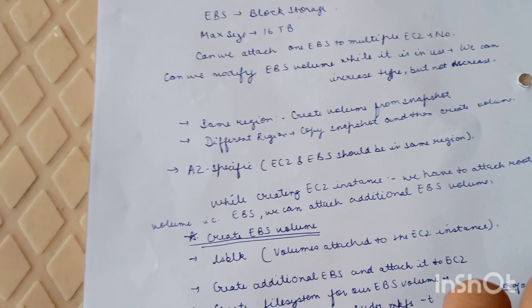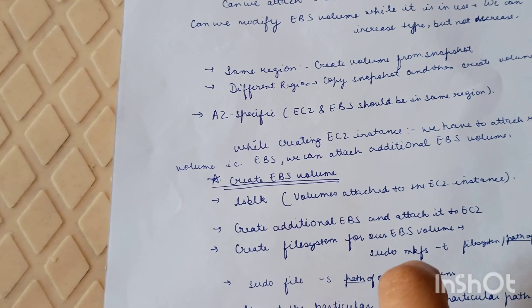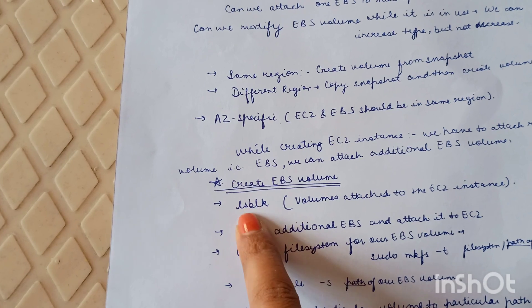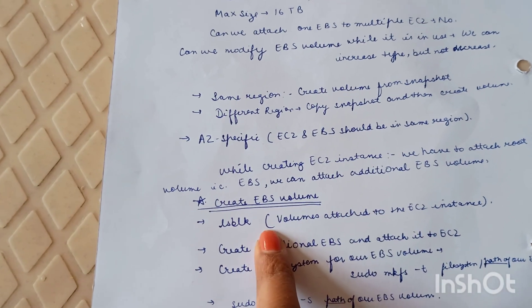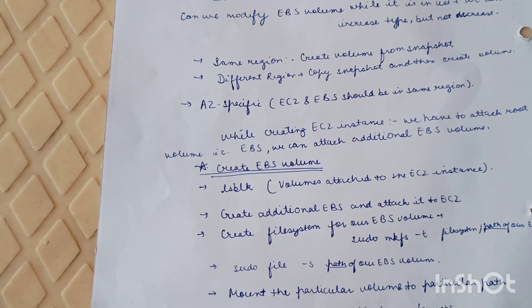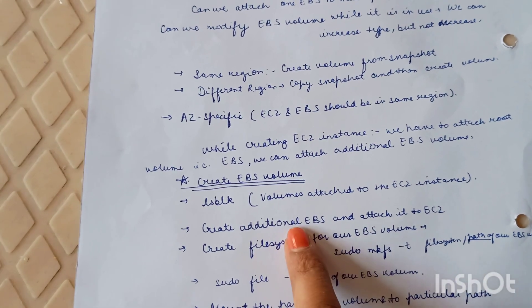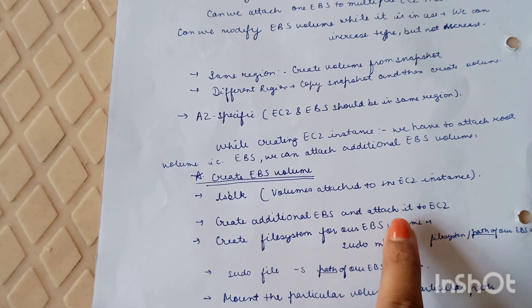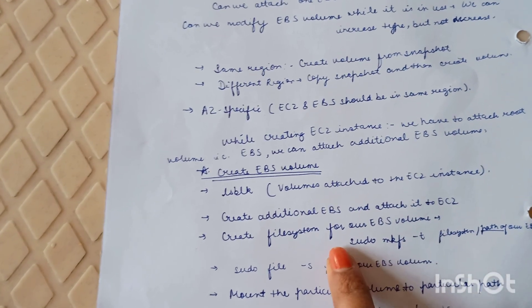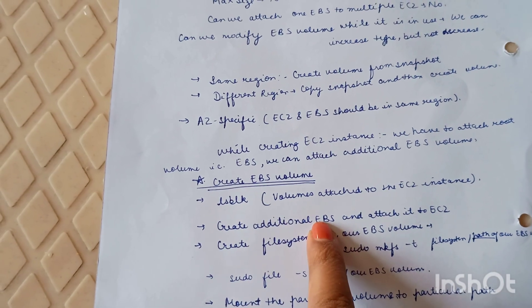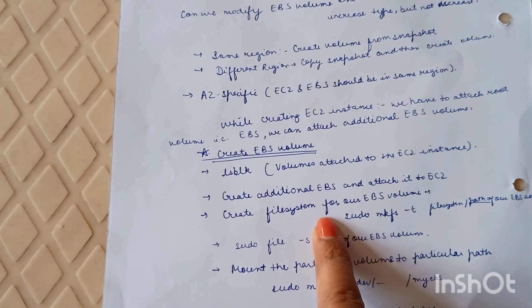To create an EBS volume, once the EC2 instance is created, we go inside the instance and run the command `lsblk`, which lists the block storage volumes attached to our EC2 instance. We will see the root volume already attached. If we want to attach an additional EBS volume, we go to the AWS UI, create an EBS volume, and attach it to the EC2 instance. Running `lsblk` again will show the new volume.